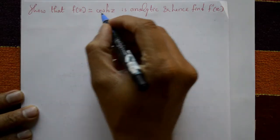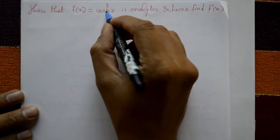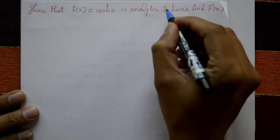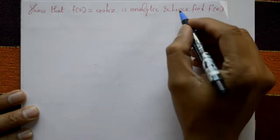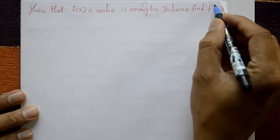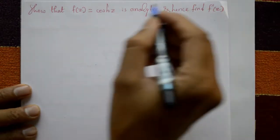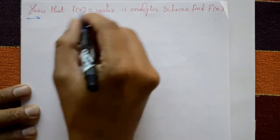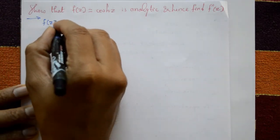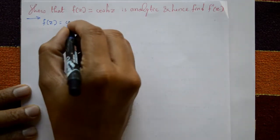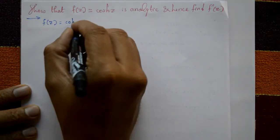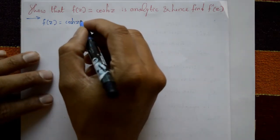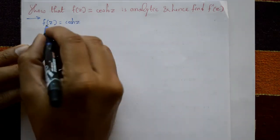Show that f(z) = cosh(z), the hyperbolic function, is analytic, and hence find f'(z). Given f(z) = cosh(z).